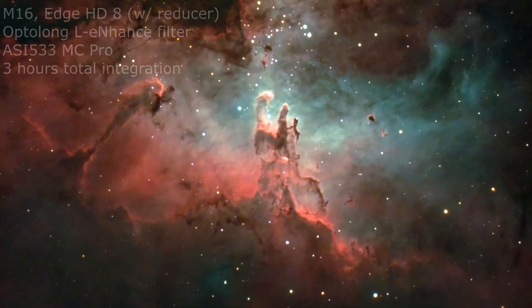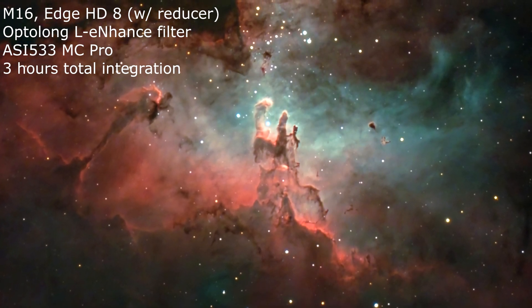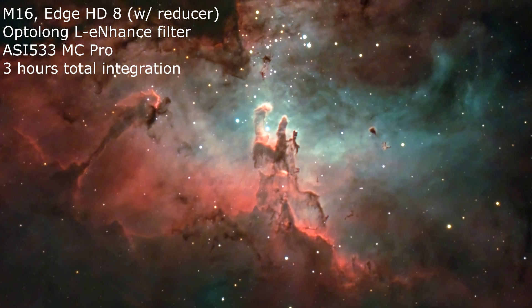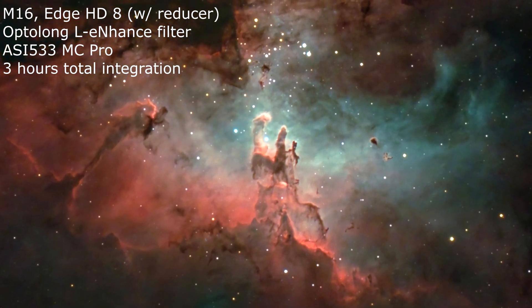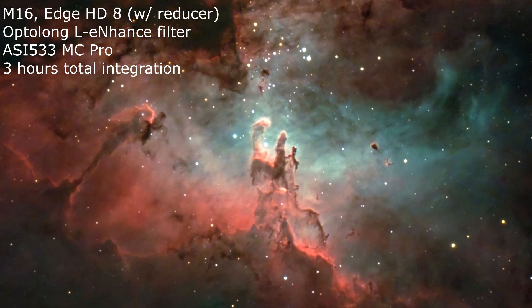So nowadays, there are tons of options on the market for dual and tri-band filters for one-shot color cameras. These filters block out a majority of light pollution and isolate a nebula's emissions in the H-alpha and O3 wavelengths. They're designed to work with emission nebula. They do an excellent job of eliminating light pollution and creating much better contrast for those types of targets.